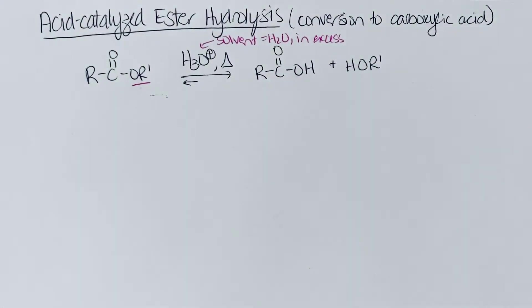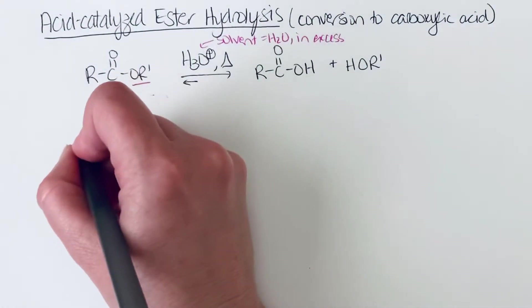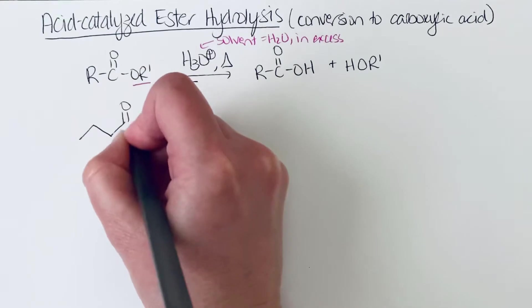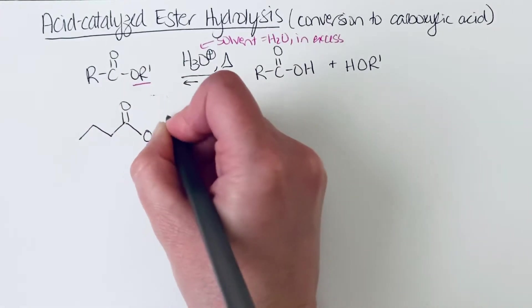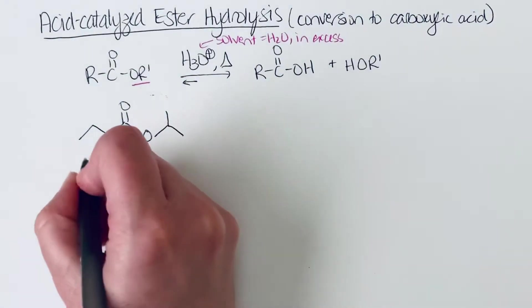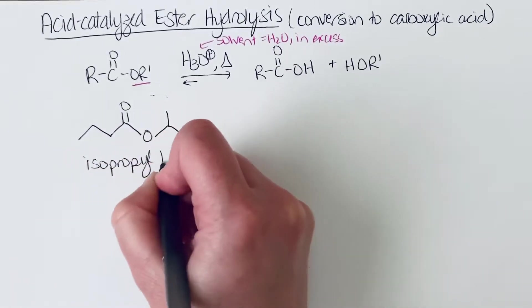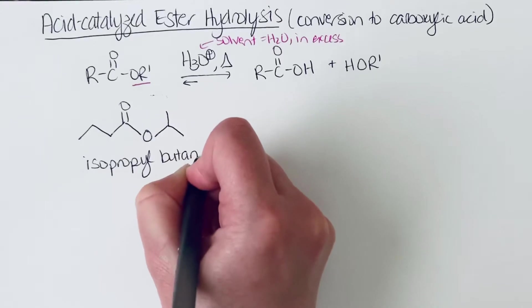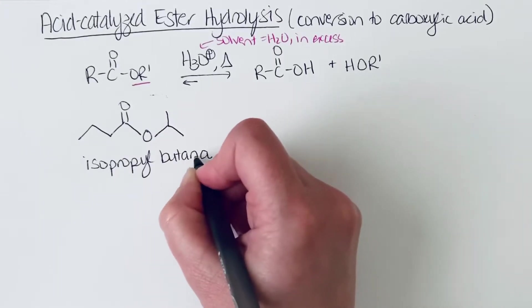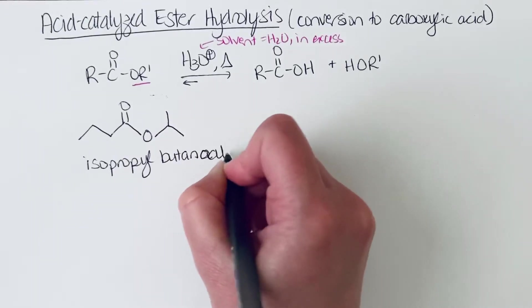So let's look at an example. So let's just draw an ester. So what do we have here? So let's say this is isopropyl butanoate.